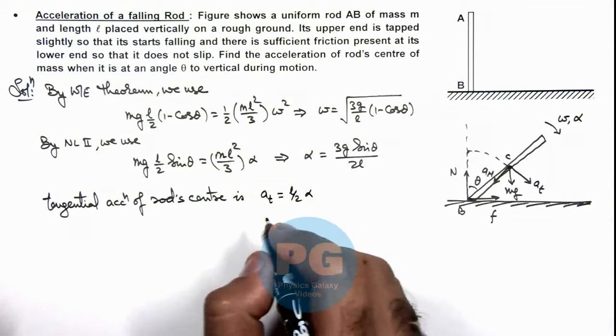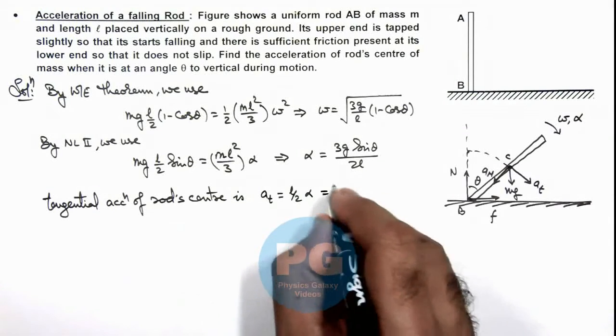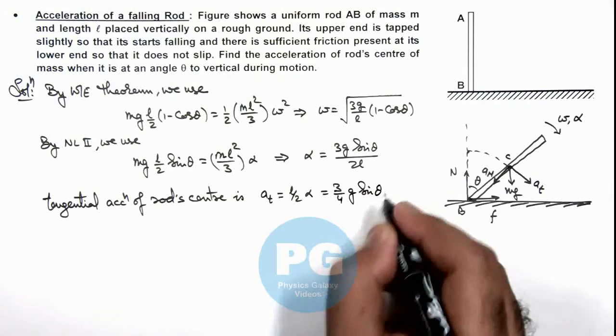When we substitute the value of alpha, this gives us (3/4) g sin θ, that is the tangential acceleration.